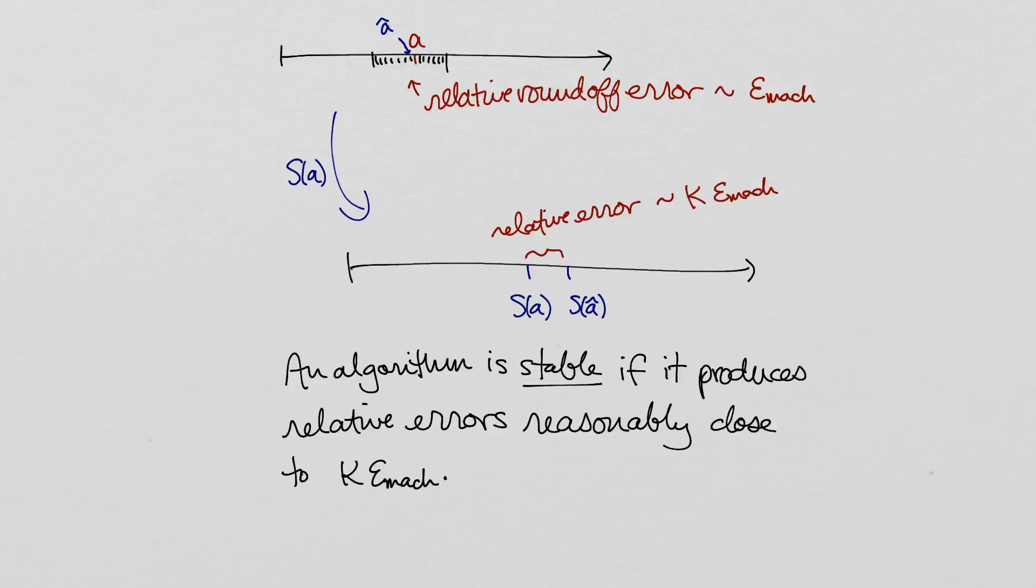So a problem is ill-conditioned or well-conditioned according to whether it is possible in principle to solve the problem accurately, while an algorithm is stable or unstable according to whether it performs well given the constraints of the problem's condition number.